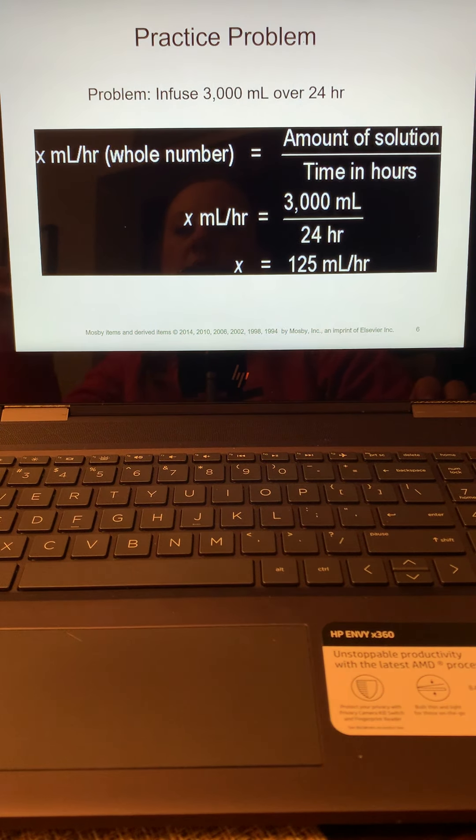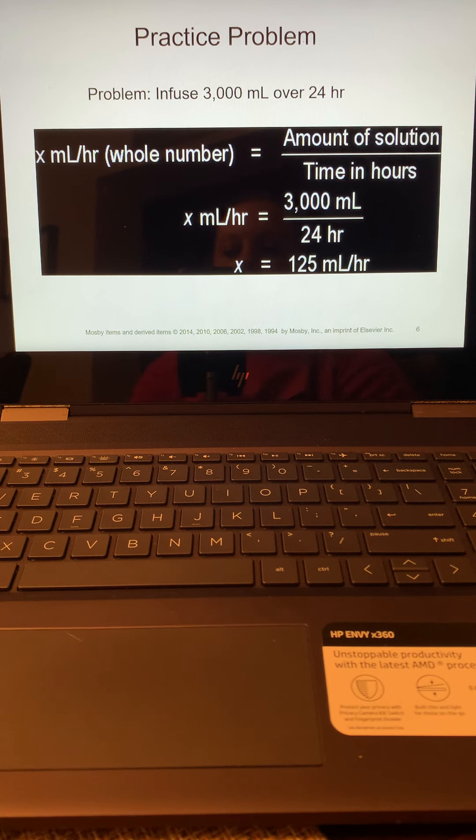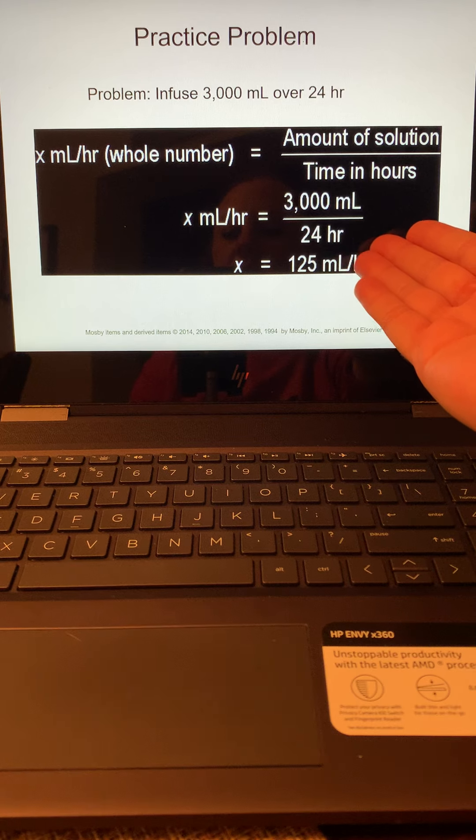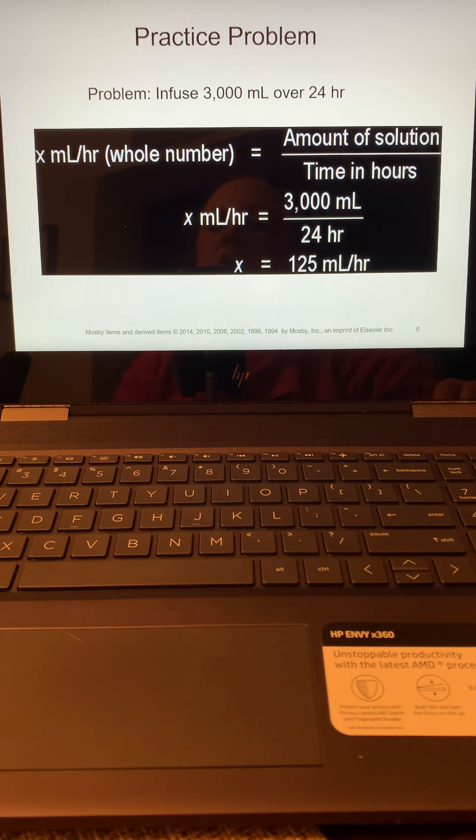So if we are infusing 3,000 milliliters over 24 hours and you need to know how to calculate that in milliliters per hour, you would just take 3,000 milliliters and divide it by 24 hours to give you 125 milliliters per hour. So you may see some questions that say to run X amount of milliliters over X amount of hours. And that's just a very simple division calculation.